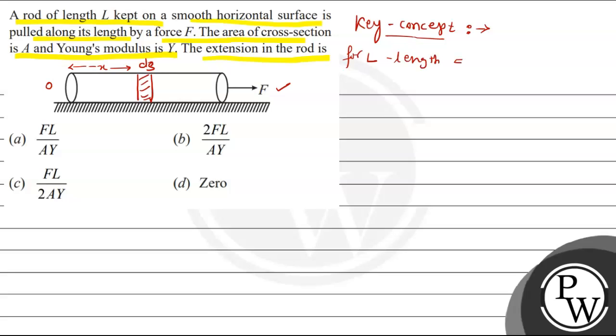Therefore, for unit length, force is F upon L. And for X length, because I have to choose X distance, the force for X length is F by L into X. So, we have to take care of it. Now, let's look at the solution.